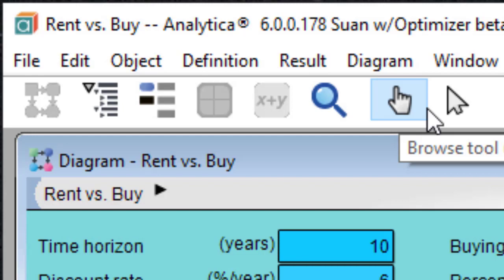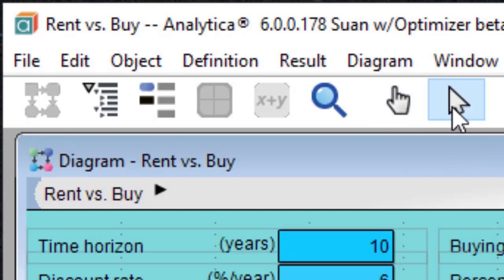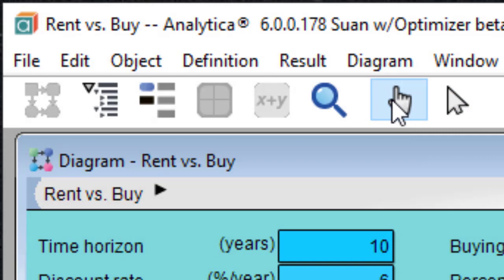The Browse tool allows you to calculate the model, change input values, and examine, but not change, the structure of the model. If you wanted to change the model itself, you would need to enter edit mode. But for this lesson, we are only going to use Browse mode.